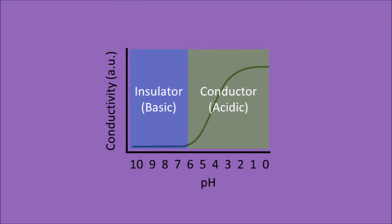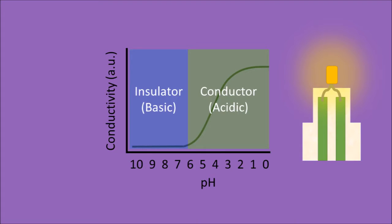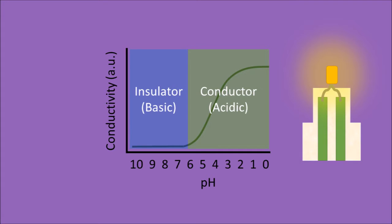For example, we made an LED circuit using the PolySketch Pen. It will get brighter in the presence of acid, but darker in basic environments.